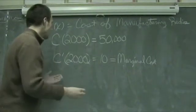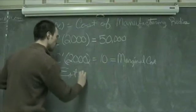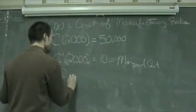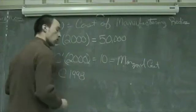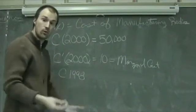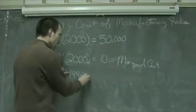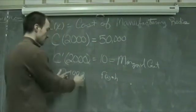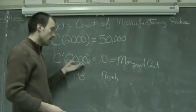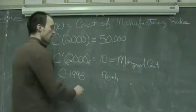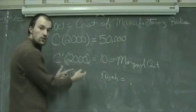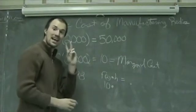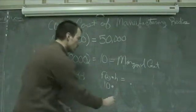Now, what the question is asking us is for us to estimate the cost, what the C of 1998 or what the approximate cost of producing 1,998 radios would be. Now, this again comes from our formula F prime of A times H, H being the direct distance, the distance away from the A value. In our case, it's 2,000. And this is going to be, what's F prime here at 2,000? It's 10 times how far away from 2,000 are we? And that is a 2, but it's 2 less, so it's a negative 2.